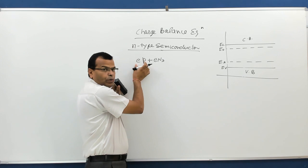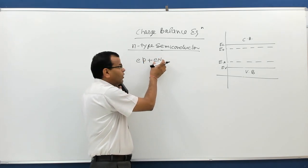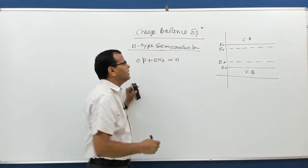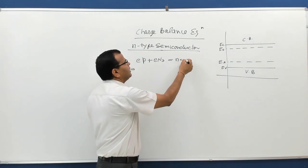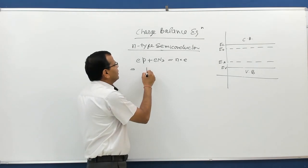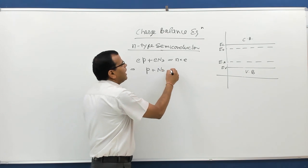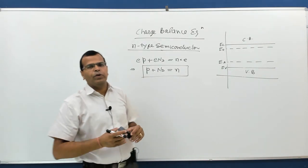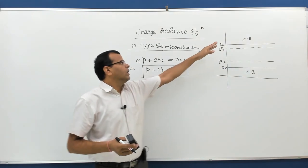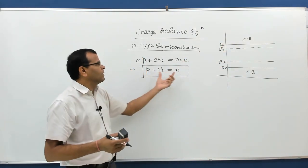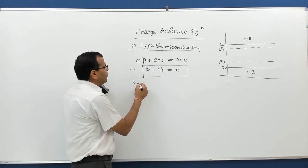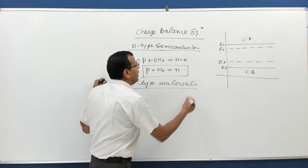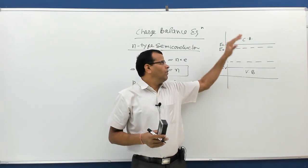The total positive charge — holes in the valence band plus positive charge at the donor level — must equal the total negative charge, which is electrons in the conduction band (n × e). This gives p + Nd = n, the charge balance equation for n-type material. Similarly for p-type semiconductors, we have only an acceptor level and no donor level.